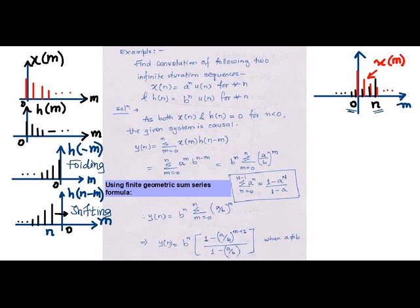From these overlapped sequences, it is clear that the lower limit is 0, and the upper limit will be decided by n of h(n-m), because beyond n the sequence h(n-m) is 0. Thus the upper limit is fixed up to n.